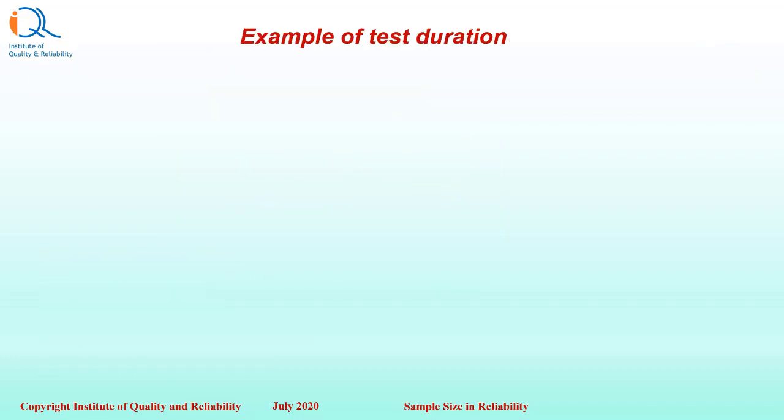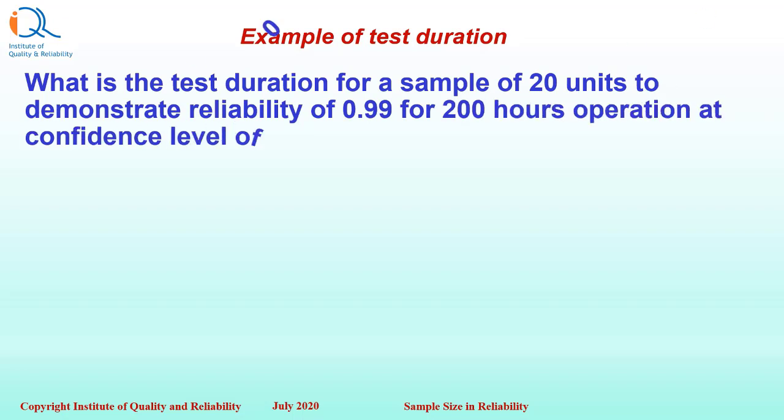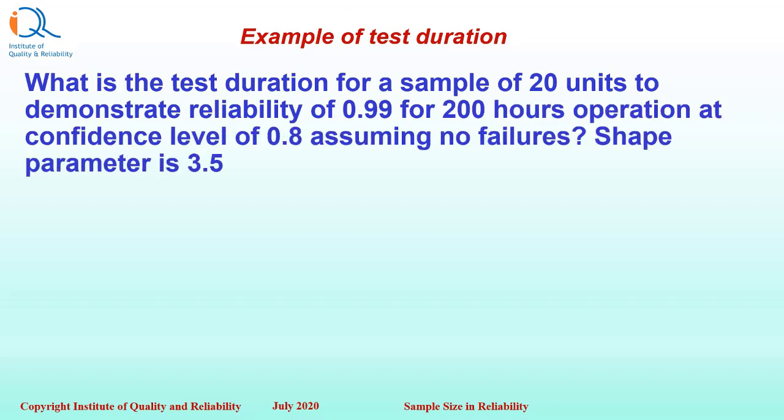Let us see an example of finding test duration when sample size and beta values are given. What is the test duration for a sample of 20 units to demonstrate reliability of 0.99 for 200 hours operation at confidence level of 0.8 or 80% assuming no failures? Shape parameter is 3.5.